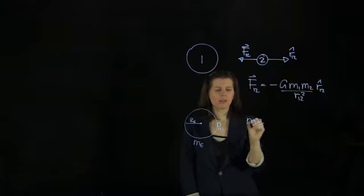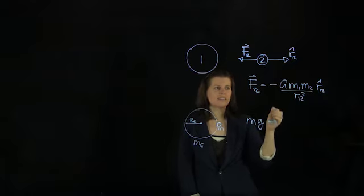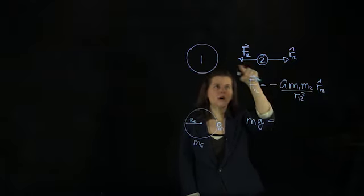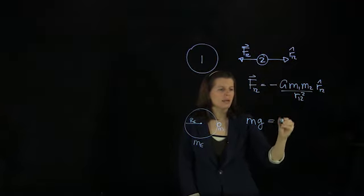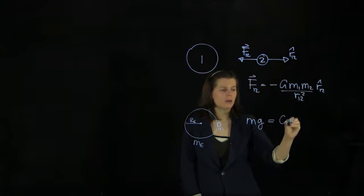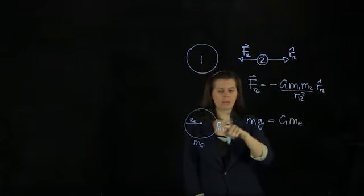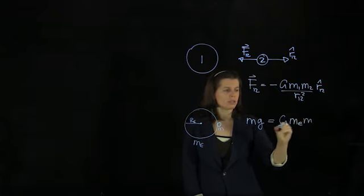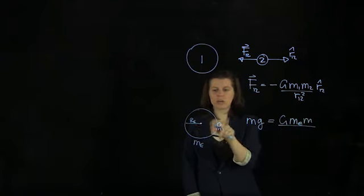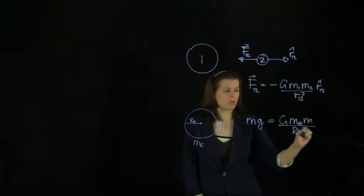And we know that that is the same as the magnitude of this force here. So we can equate that with G, and then we have the Earth mass and the mass of the moon rock times the distance squared, so an Earth radius squared.